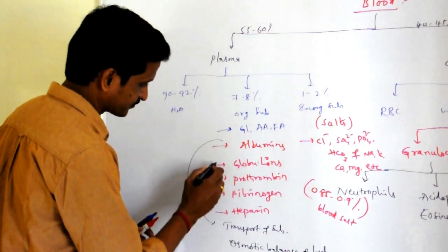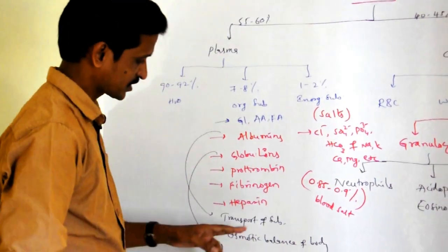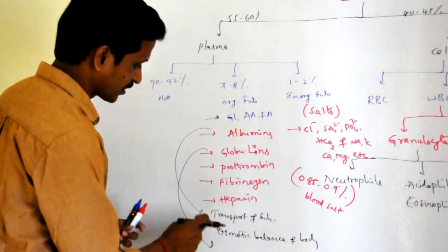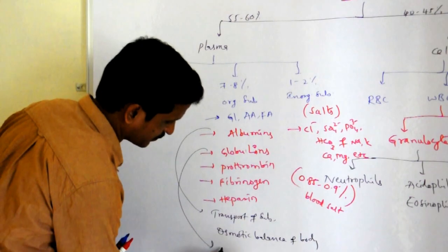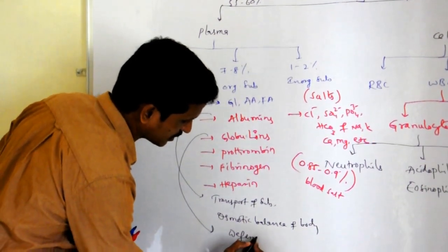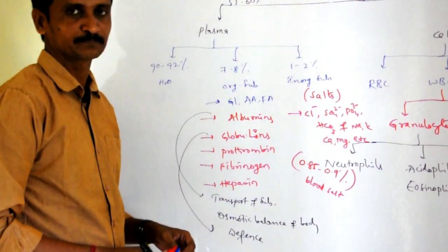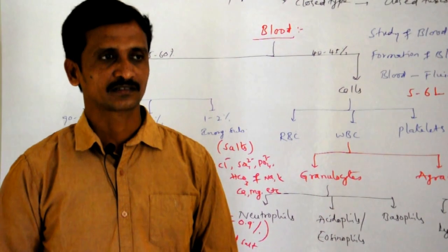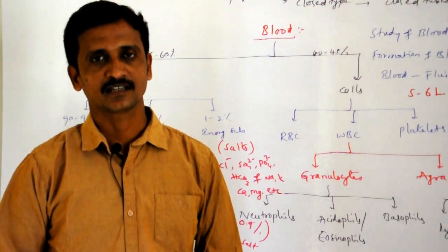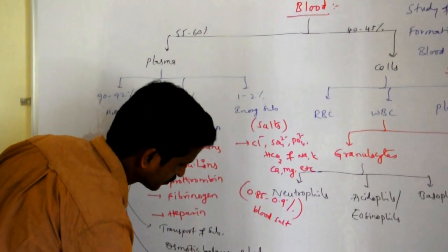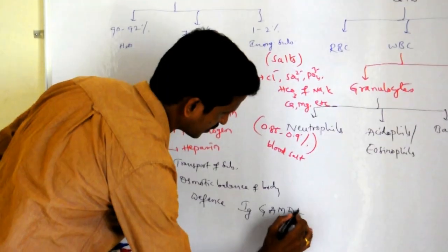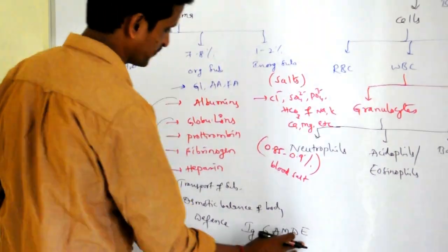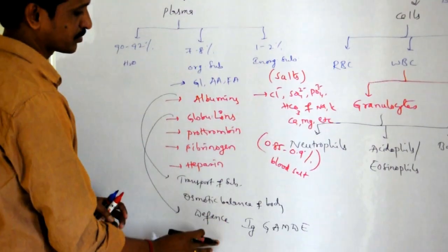Globulins are actually immunoglobulins. There are five types of immunoglobulins present in the body, called together as GAMDE: IgG, IgA, IgM, IgD, and IgE. These five types of immunoglobulins are responsible for providing defense.